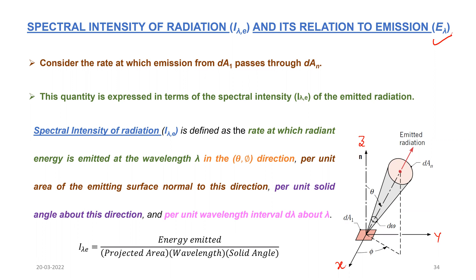Consider the rate at which the emission from area dA1 passes through area dAn. You have to refer to this particular diagram here. This is the area dA1, and the emission is taking place in this particular direction. This is the emitted radiation, and this is area dAn through which these radiations are leaving. This cone is making an angle d_omega at the center of area dA1.